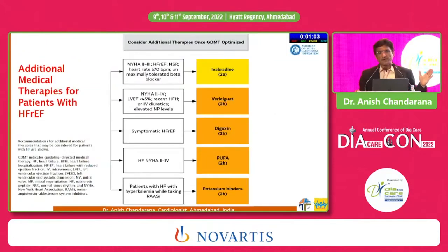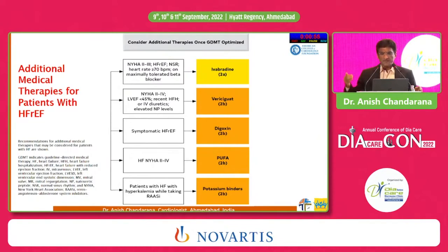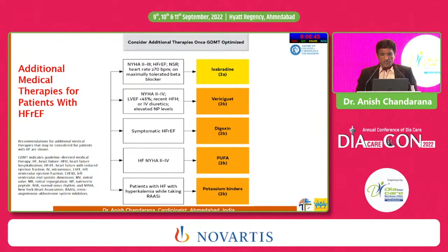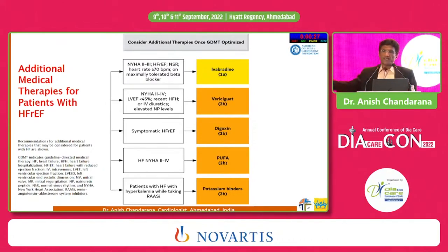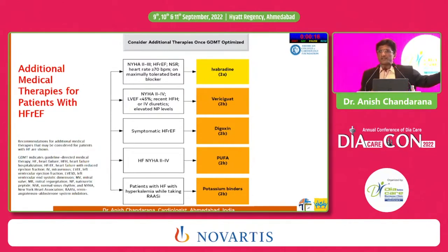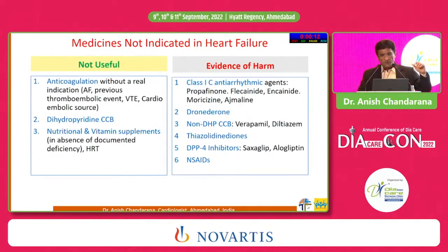Additional medical therapies: Ivabradine — if after maximizing beta-blocker dose the heart rate remains above 70 in HFrEF, start ivabradine. Vericiguat — once four pillars are in place and the patient still worsens. Digoxin — a poor man's choice, but use a low dose of 0.125 mg per day, being careful about age and creatinine. Potassium binders: when pushing the dose of ARNI or ACE inhibitors, many patients develop borderline potassium of 5.5 mmol/L — potassium binders can allow continuation of RAS blockade, though data are borderline and availability in India is limited.